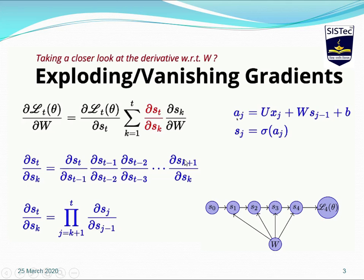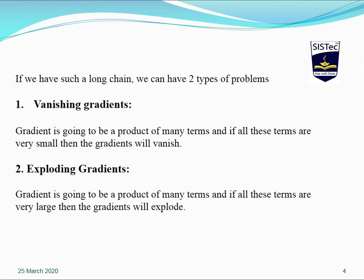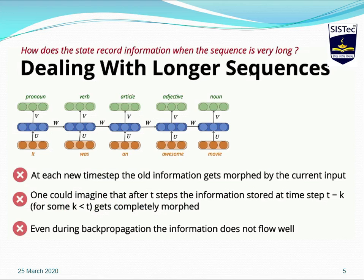In real-time scenarios we have long inputs. For example, if you want to find the activity in a video that is 30 minutes or 1 hour long, it will have many frames. If there are 10,000 frames, the number of time steps will be more than 10,000. Once we multiply across all these steps, the RNN will suffer from either the exploding or vanishing gradient problem. This is the first limitation of RNN: if the network size is large or has many layers, it suffers from these gradient problems.